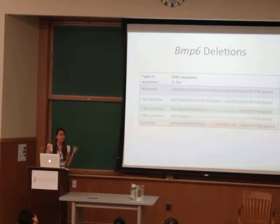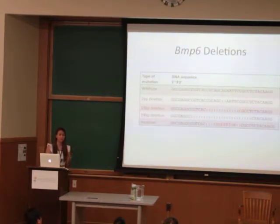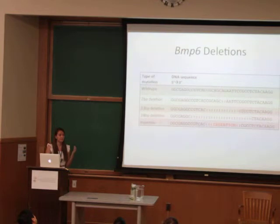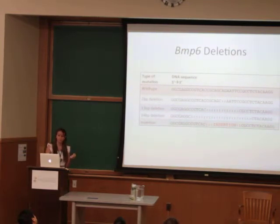However, if a fish has BMP6 deletions in its germline, we can breed this fish to produce offspring that are heterozygous for a BMP6 deletion. This would be a stable line, and generating a stable line was one of our goals for the summer.